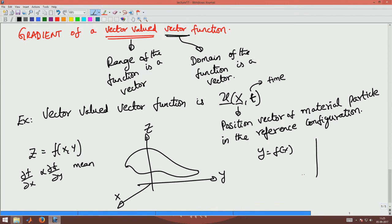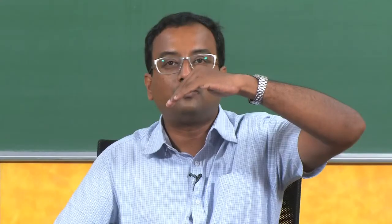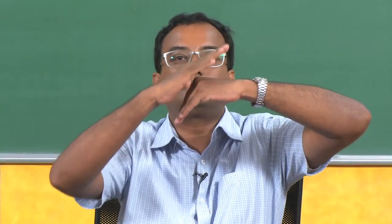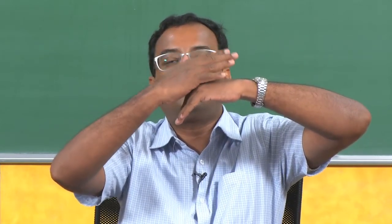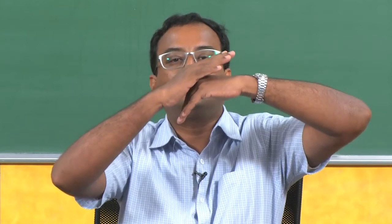Just like when you have a function of a single variable — y equals f(x) — if I plot x versus y and get a curve, at any point x the slope of the tangent at that point is given by dy/dx. Similarly, when I have a function of two variables, a surface is formed, and there will be a tangent plane to that surface. This tangent plane is characterized by two slopes: how the slope is along one direction, and how it is along another mutually perpendicular direction.